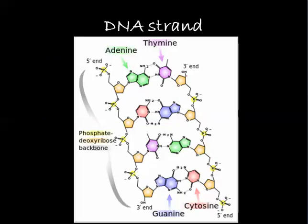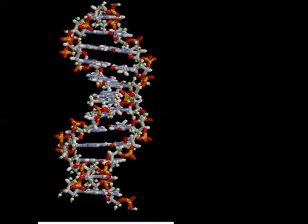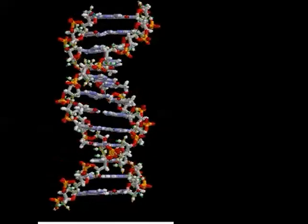The same can be seen in the structure — the five prime end ends in a phosphate molecule and the three prime end ends in a sugar molecule. In between both the strands, they are connected by hydrogen bonds, forming a complete double helical structure of DNA. In a further session, we'll discuss how heredity takes place and how the transfer of various traits occurs.